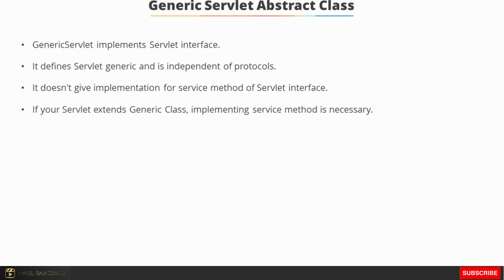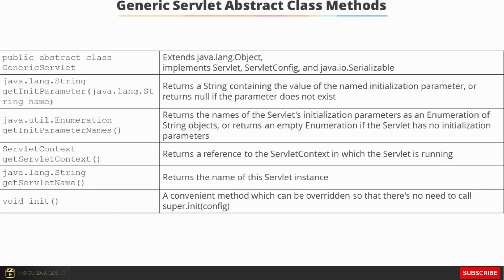The GenericServlet abstract class implements the servlet interface. It defines a generic servlet and is independent of protocols. It does not provide an implementation for the service method of the servlet interface. If your servlet extends GenericServlet, implementing the service method is necessary. The getInitParameter method returns a string containing the value of the named initialization parameter, or null if the parameter does not exist.